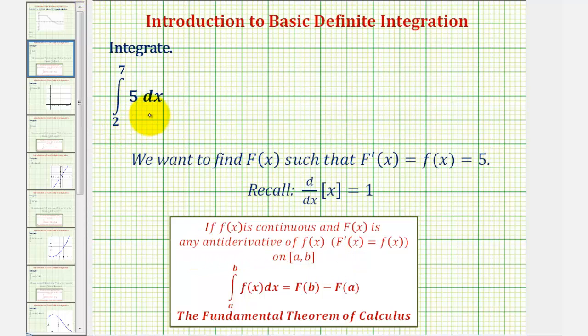So we'll use the anti-derivative five x to evaluate this definite integral, and now we're going to evaluate this at the upper limit of integration, or seven, and then evaluate this at the lower limit of integration of two, and then find the difference.